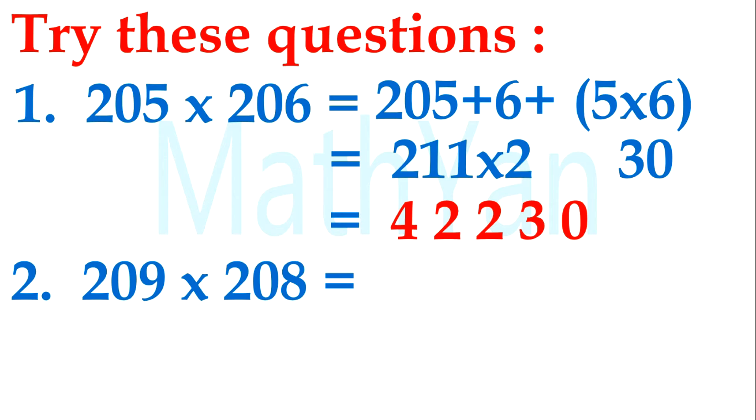What about this? 205 times 208. 205 plus 8 is 213, 217. 217 times 2 is 434. The number behind, 5 times 8 is 40. So it's 43440.